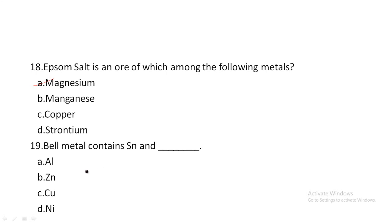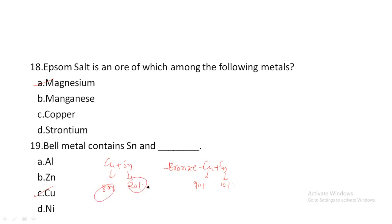Next one: Bell metal contains Tin and dash. Option A: Aluminium, Option B: Zinc, Option C: Copper, Option D: Nickel. Bell metal is the alloy of Copper plus Tin — in bell metal, Copper is 80% and Tin is 20%. Bronze also has the same elements — Copper plus Tin — but with different composition: about 90% Copper and 10% Tin. Note: Brass has no silver; German silver has no actual silver.